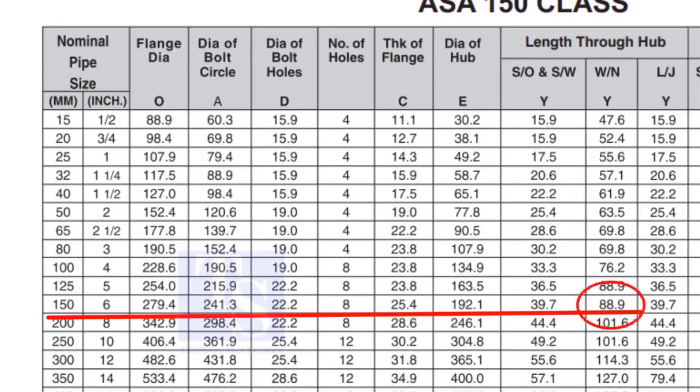Check the height of the flange in the table. Since the pressure rating is 150, the height of the flange is 88.9mm. Note down the height.